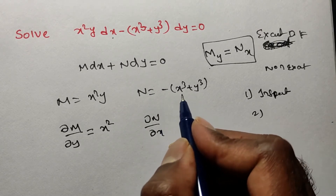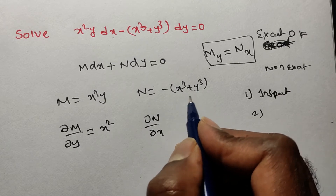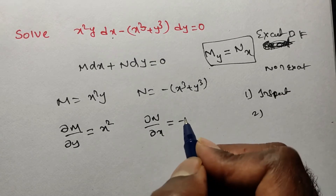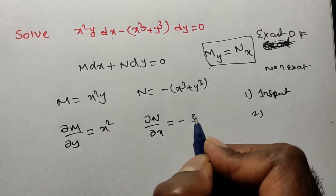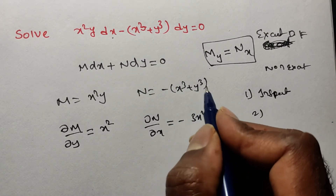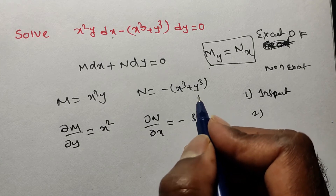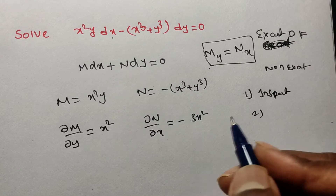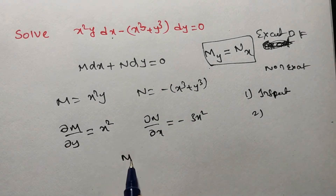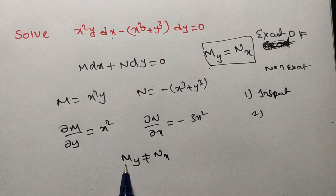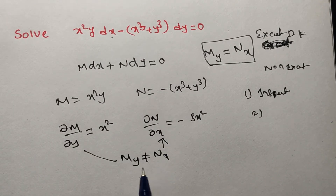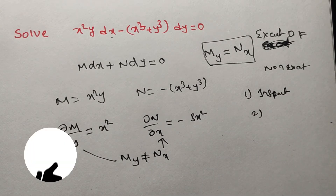Now ∂N/∂x: N is a function of two terms, x³ and y³. The derivative of −x³ with respect to x is −3x². Since y³ does not contain any x term, its derivative with respect to x is 0. So ∂N/∂x = −3x². By observation, ∂M/∂y ≠ ∂N/∂x, so both are not equal. Therefore this is a non-exact differential equation.